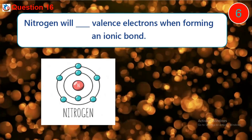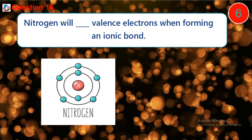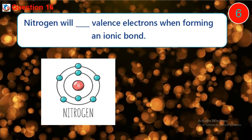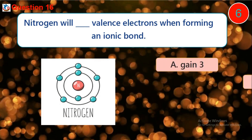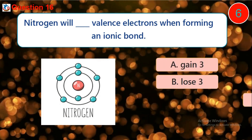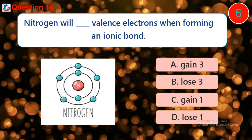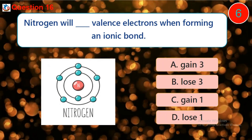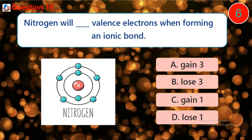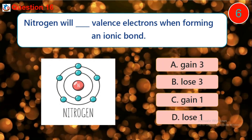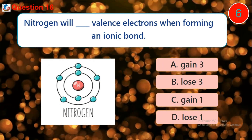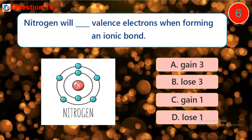Question 16: Nitrogen will dash valence electrons when forming an ionic bond. A) Gain 3, B) Lose 3, C) Gain 1, D) Lose 1.